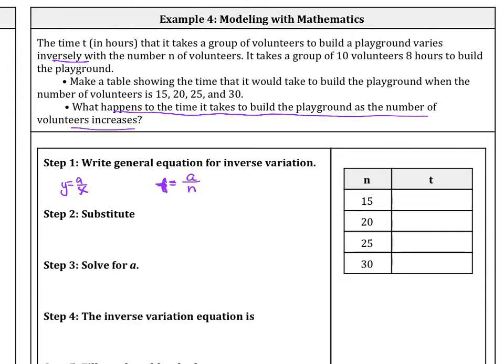So we know that volunteers is our n, and 8 is our time. So we want to find the equation for this model here. So let's plug in n and t and solve for a, so we can have our general equation. So 8 equals a over 10, and then let's solve for a. So we find that a equals 80. So our general equation is t equals 80 over n.